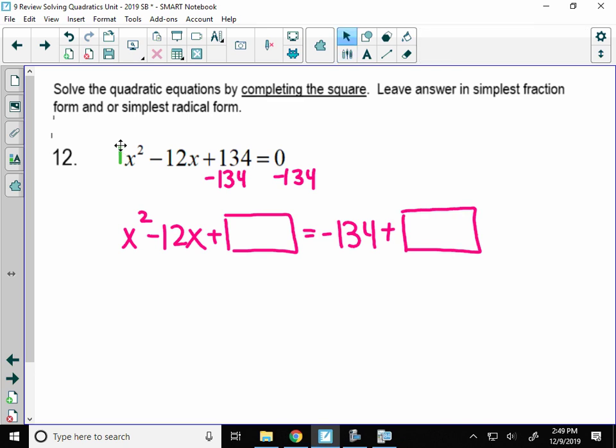Now we have to fill in the box, and to fill in the box, you're going to take half of that middle number. Half of B and square it. Well, negative 12 over 2 is negative 6. Negative 6 squared is positive 36. The number that goes in the box should always be positive.